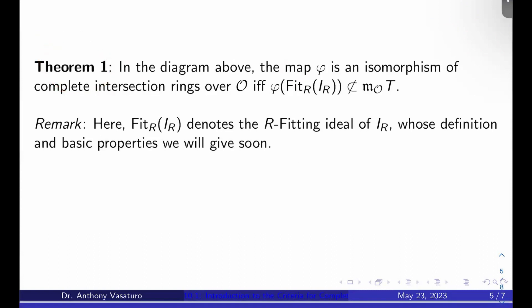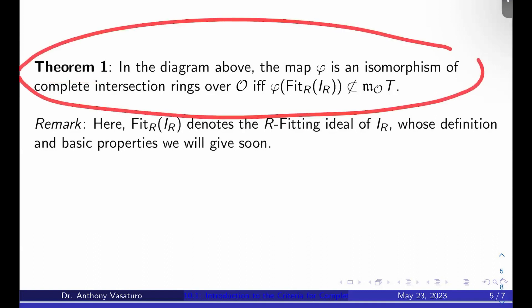This theorem one here. Here's the theorem: it says in the diagram above, the map φ in that triangle is an isomorphism of complete intersection rings over O, which is what we want to happen, if and only if φ of the so-called R fitting ideal of I_R is not contained in m_O times T. We'll talk about fitting ideals in a different video. But we're going to actually end up showing this, and then we're going to discuss the relationship between theorem one and criterion one. It's just that we would prefer to use this instead. This avoids the Gorenstein-ness and all that, but there is a relationship between the two. We're going to need criterion one still.